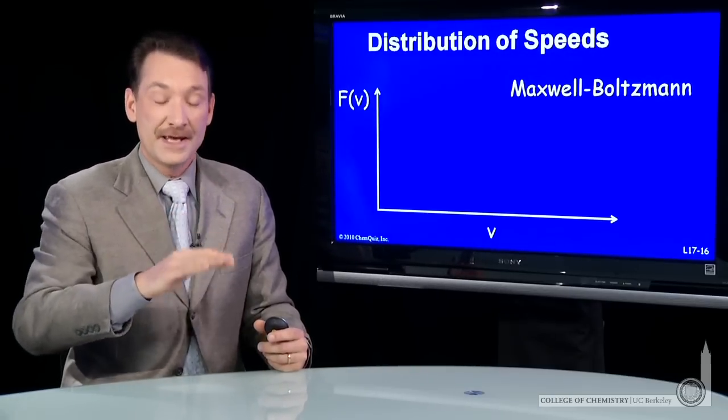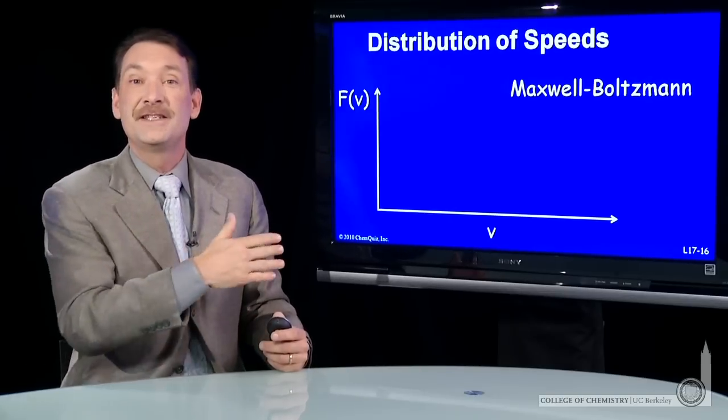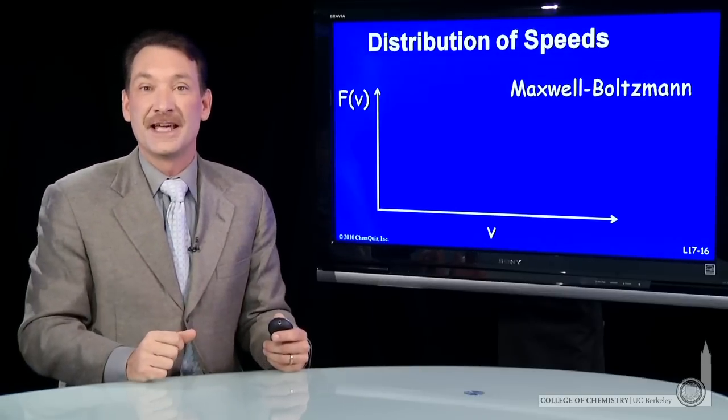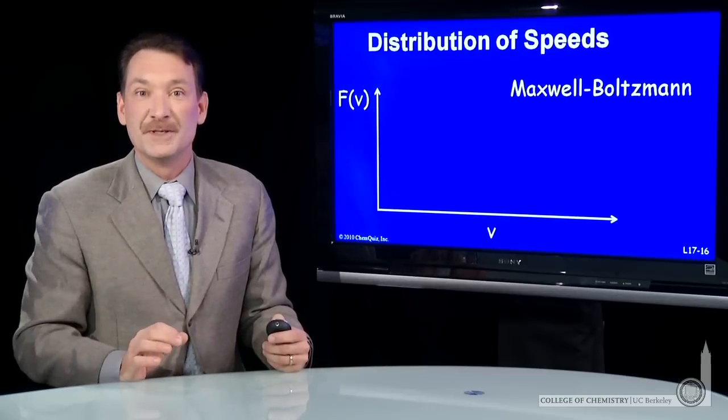So if we plot the number of particles with a given speed versus speed, we get a distribution of the speeds in the gas. And that distribution of speeds is called the Maxwell-Boltzmann distribution.